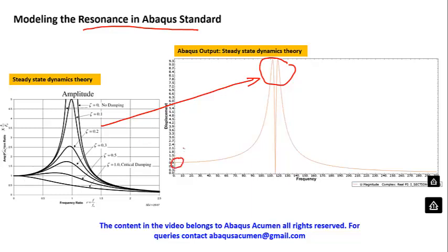When the loading frequency and natural frequency ratio trends toward one, you get nothing but a static response — that is k over F. When the loading frequency and natural frequency are far away from one, trending toward more than two, your response is much lower compared to x1.